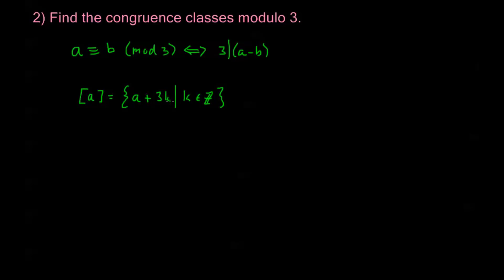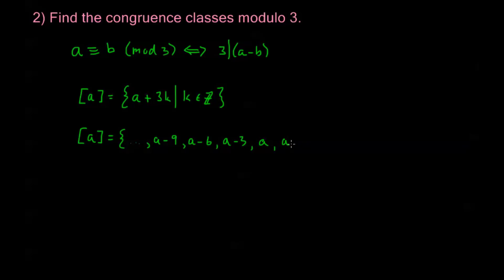If I add something to a that is a multiple of 3 and then subtract b, well 3 divides a minus b and 3 divides 3k, so 3 is still going to divide this number minus b. So all of those are going to be in this equivalence class. In other words, the congruence class [a] equals: ..., a minus 12, a minus 9, a minus 6, a minus 3, a, a plus 3, a plus 6, ... These are all of the elements in the congruence class of any element a.